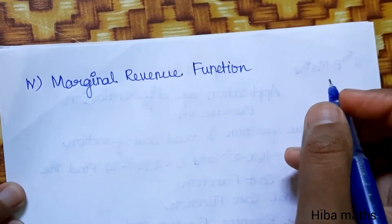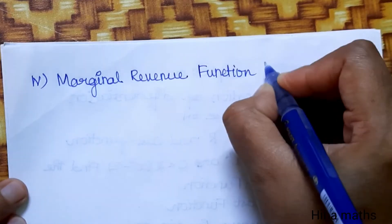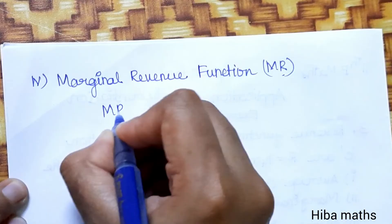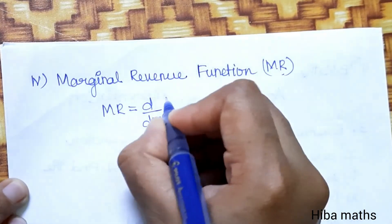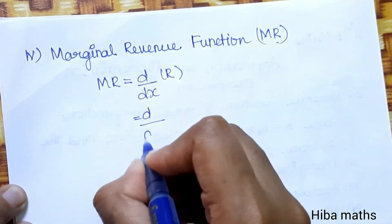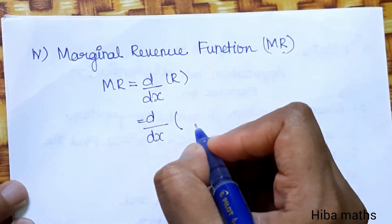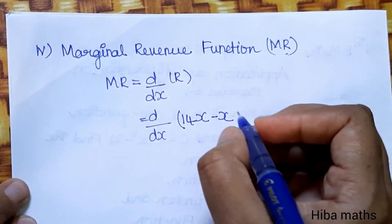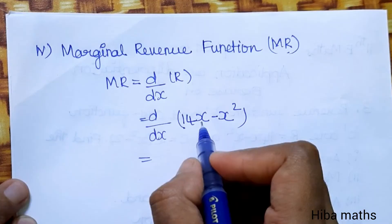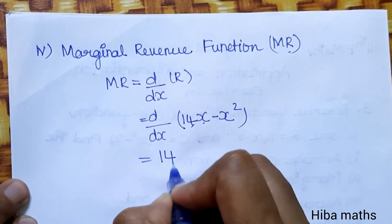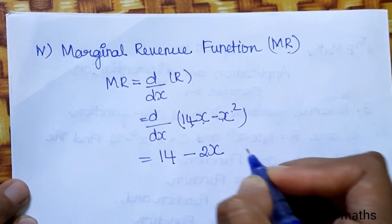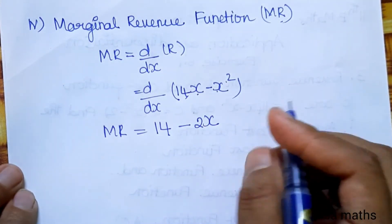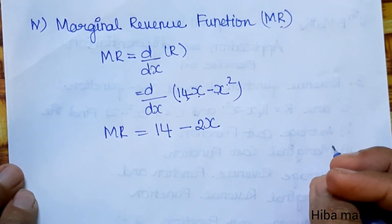Last question: marginal revenue function MR. MR is found by differentiation of R. So MR = d/dx of R = d/dx(14x - x²). Differentiating: 14x gives 14, and x² gives 2x. Therefore MR = 14 - 2x. Thank you so much for watching.